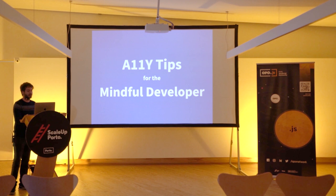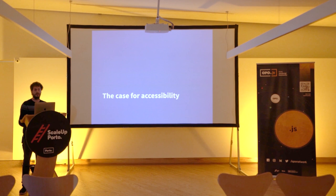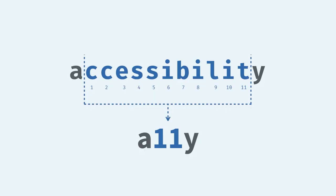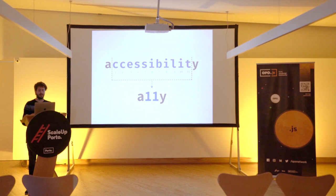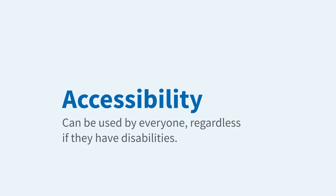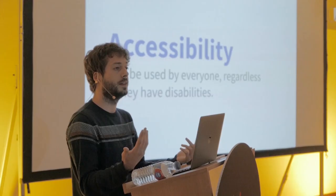As Marco pointed out, I wanted to give you some helpful accessibility tips that you can take to your work. But first, I want to talk a little bit about accessibility — it might not be familiar to all of you. Accessibility is often shortened to A11Y. Accessibility is the ability of something to be used by everyone, even if a person has some disabilities.